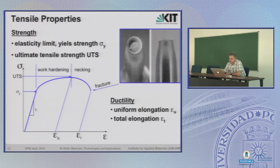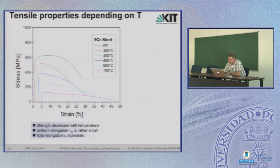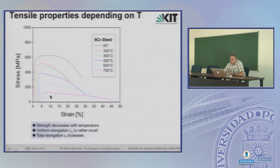Looking at properties depending on temperature, this curve starts at room temperature. Going along it, temperature increases up to 700°C for the example of a 9% chromium steel. Besides strength generally decreasing with temperature, the uniform elongation — the strain up to the maximum point — is significantly reduced at higher temperatures. In general, total elongation of the specimen increases with higher temperatures.